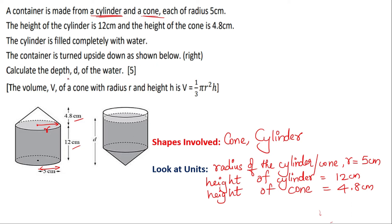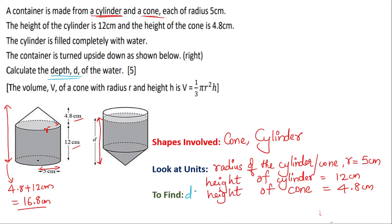Now what is the question? Calculate the depth d of the water — they are asking you to find the depth d in centimeters. From the figure, the total height of the container is going to be 4.8 plus 12 centimeters, which is 16.8 centimeters. We are asked to find depth d, and since we are dealing with depth it's the volume we are talking about. We should know the volume of a cylinder and the volume of a cone.